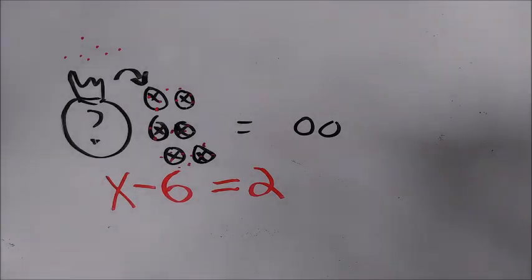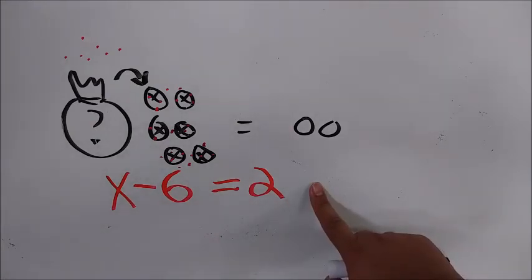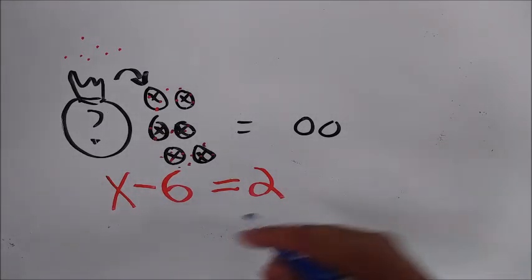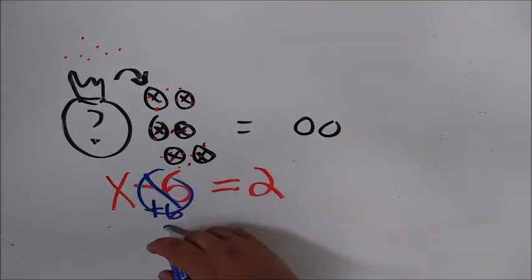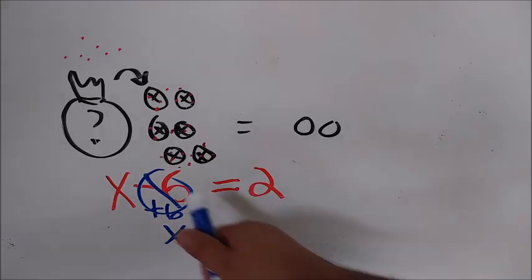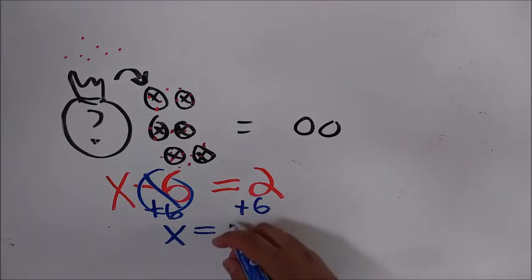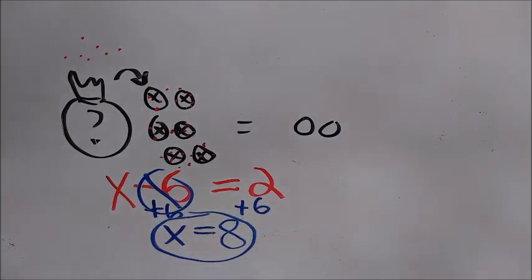How many Jolly Ranchers did we have? Well, just like before, we're going to do the opposite operation in order to find out how much we originally had. Here we're subtracting, and the opposite of subtraction is addition. So we're going to add 6 to this side, get our X all by itself. Now what you do to one side, you have to do to the other. Otherwise it isn't equal. So 2 plus 6 is 8. We originally had 8 Jolly Ranchers.